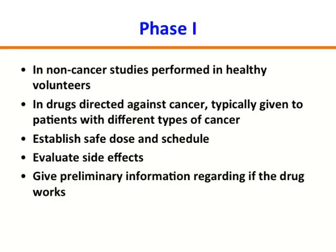In non-cancer populations, phase 1 studies are often done in healthy volunteers. In cancer patients, that's not true. In most phase 1 studies, a drug is initially given to patients with many different types of cancer to evaluate dose, schedule, and toxicity. However, as we develop more targeted drugs, it doesn't always make sense to study them across multiple cancer types, so you'll see more phase 1 studies done specifically in hematologic or blood cancers. We establish the safe dose and schedule, evaluate side effects, and look for a preliminary signal of whether the drug works in that patient population.